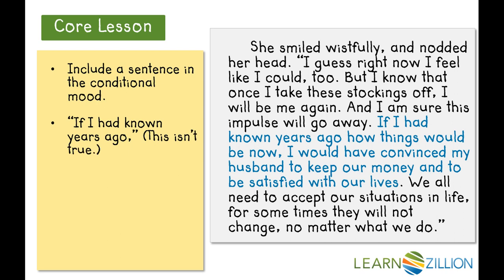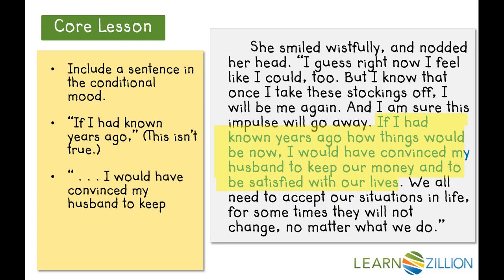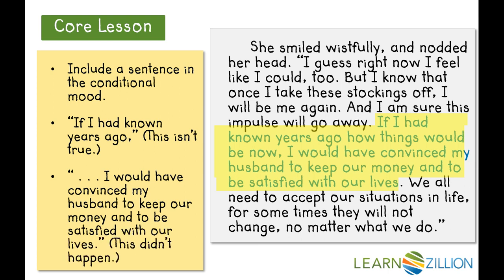Here is what I came up with: "If I had known years ago how things would be now, I would have convinced my husband to keep our money and to be satisfied with our lives." I have included my sentence with the conditional mood. The first part — "if I had known years ago" — is not true; therefore, the second part, "I would have kept my money and been satisfied with my life," didn't happen. Using the conditional mood in this part of the story really enhances Mrs. Summers' reflection and adds to the melancholy tone of the story. It sounds pretty smooth too.